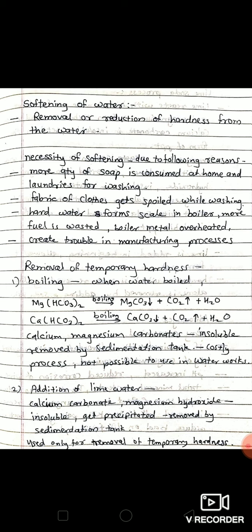The fabric of clothes gets spoiled while washing it to remove the precipitate formed by soap in hard water. In industries, hard water forms scales in boilers due to which more fuel is wasted and boiler metals are overheated, which causes danger to the boiler plant.